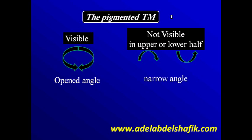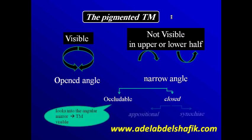This narrow angle can be occludable — just approximation between the iris and the cornea — or can be closed. This closed angle can be closed by adhesions between the iris and the cornea, which is peripheral anterior synechia, or by apposition between the iris and the cornea. In the occludable angle, the iris is very close to the cornea but there is some space in between and aqueous can pass. In apposition, the iris is in contact with the trabecular meshwork. Synechia is actual peripheral anterior synechia.